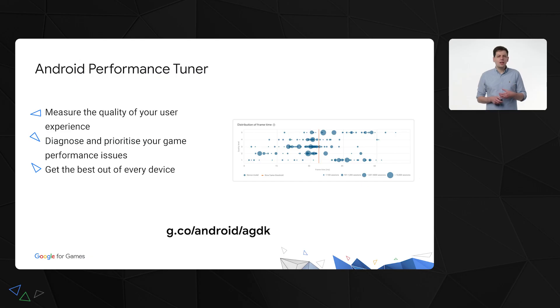Android Performance Tuner is a telemetry offering that is part of AGDK and Android Vitals. It helps you measure the quality of your user experience by showing you frame time, loading times, and abandonment rates. It helps you diagnose and prioritize your game performance issues by helping you understand when and in what situations game problems are happening. And lastly, it helps you get the best out of every device by helping you better map quality levels to devices.